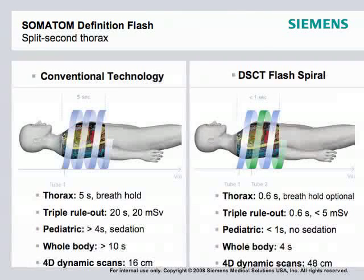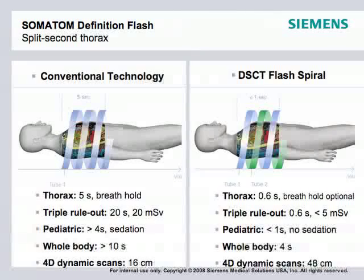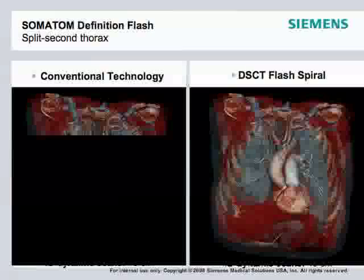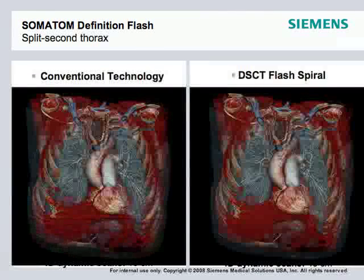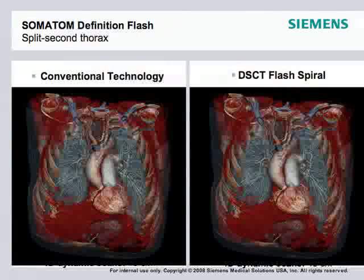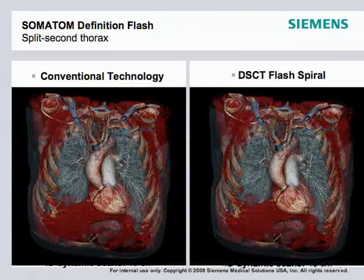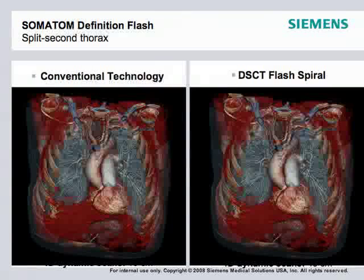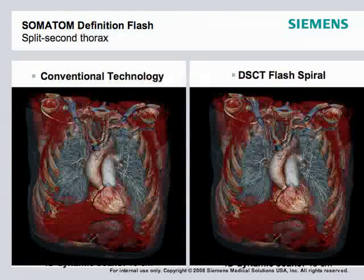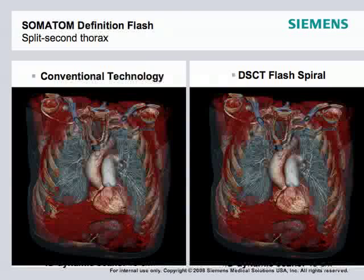At 0.6 seconds, the entire chest scan is completed — that's slightly longer than the blink of an eye. Currently, conventional scanning is around 20 millisieverts and 20 seconds for a total triple rule-out from top to bottom. With flash technology, we're able to do it in 0.6 seconds at less than 5 millisieverts — routinely around 3 millisieverts — for an entire triple rule-out exam covering the full chest from apex to base.